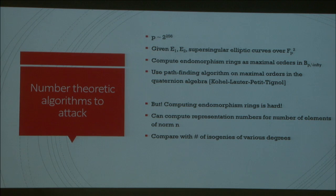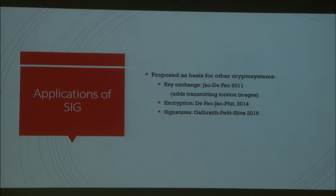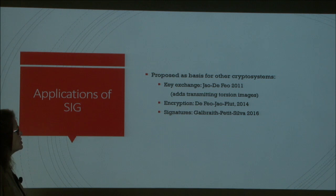Now I'd like to turn back to the applications part. I motivated talking about supersingular isogeny graphs by telling you about the NIST competition for post-quantum crypto solutions. I told you there were three tracks: key exchange, encryption, and signatures. I only talked about the application to cryptographic hash functions, which was not one of the tracks. Let me relate it back to the NIST competition and the actual submission based on supersingular isogeny graphs.